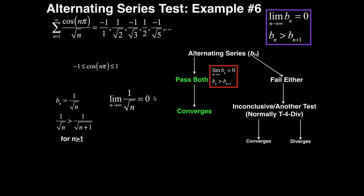In this video, we're going to do one more example of the alternating series test. We have one here, as you can see, that may not at first look seem like an alternating series. But let's just plug in a few terms and see what happens. We have the series from n equals 1 to infinity of cosine of n pi over the square root of n.